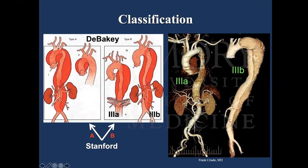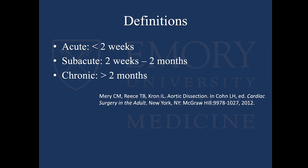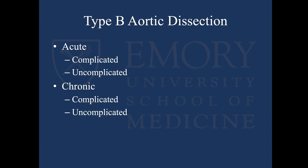For definitions, think of an acute dissection as less than two weeks, subacute as two weeks to two months, and chronic as greater than two months. That has to do not only with how patients do clinically, but with the morphology of the dissection flap. We think about type B dissection in acute and chronic stages, and can break them down into complicated and uncomplicated. I'm going to focus on acute type Bs today, and the unanswered questions lie right here in the acute uncomplicated cohort.